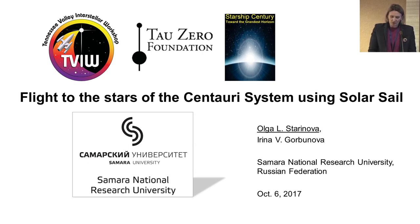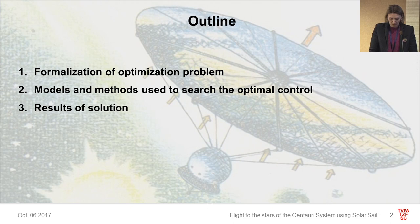I'll tell about the finding of optimal control laws for interstellar solar sail. I've divided my presentation into three sections. In the beginning, I'll speak about the statement of optimization problem when we consider the mathematical model and numerical methods, which I used to search the optimal control. And in the last part, I will talk about results of solution. I'll be happy to answer any questions in the end.